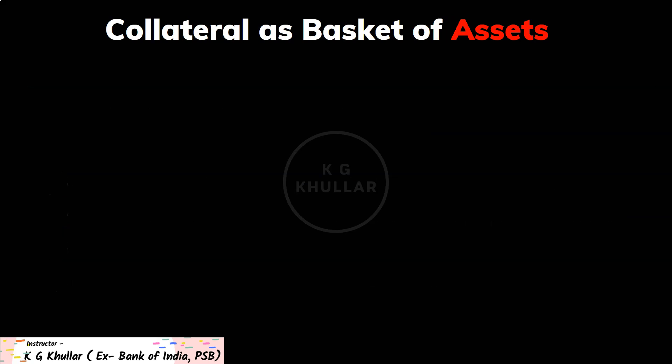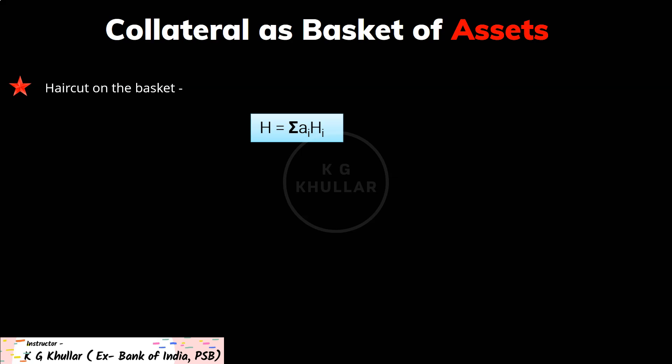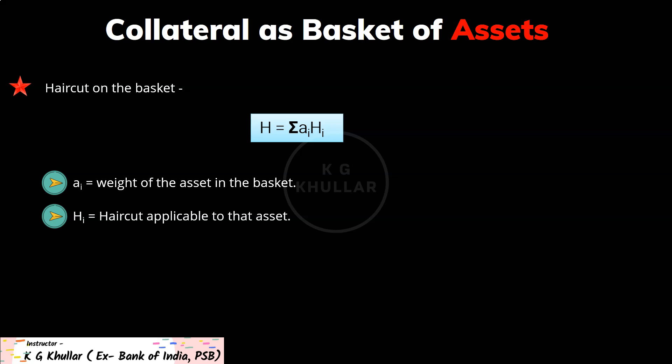Where the collateral is a basket of assets, the haircut on the basket will simply be H = Σ(ai × hi), where ai is the weight of the asset in the basket and hi is the haircut applicable to that asset.